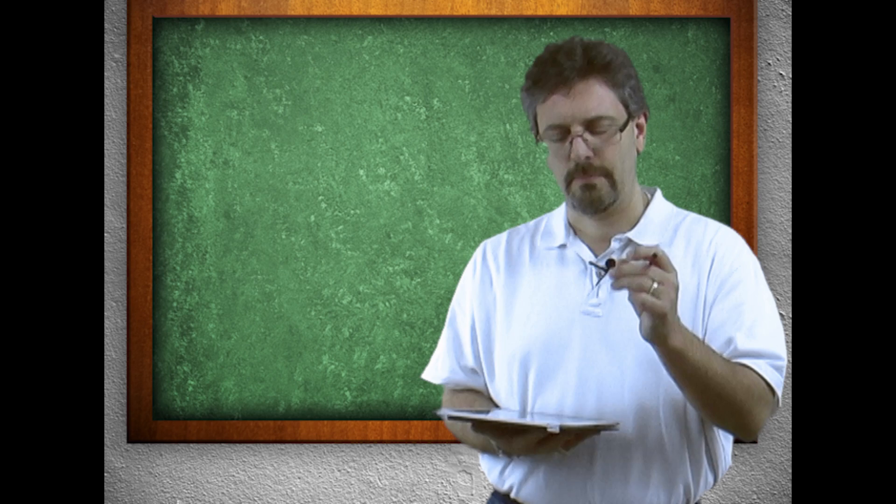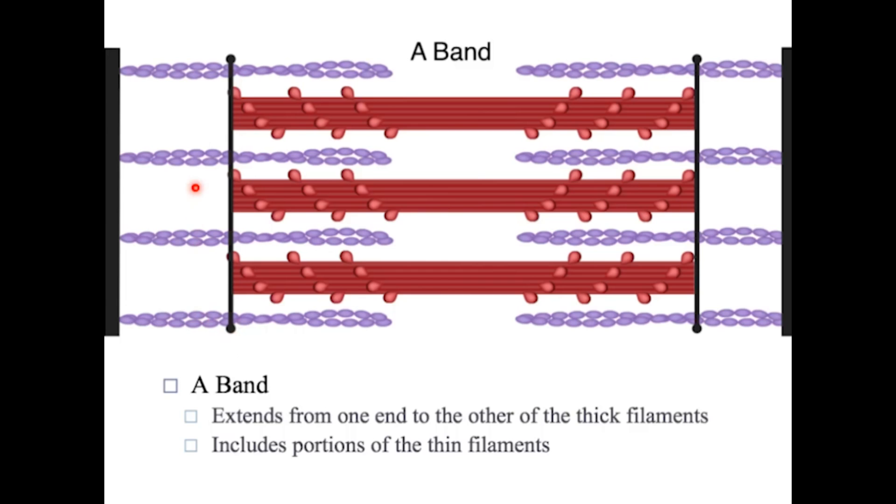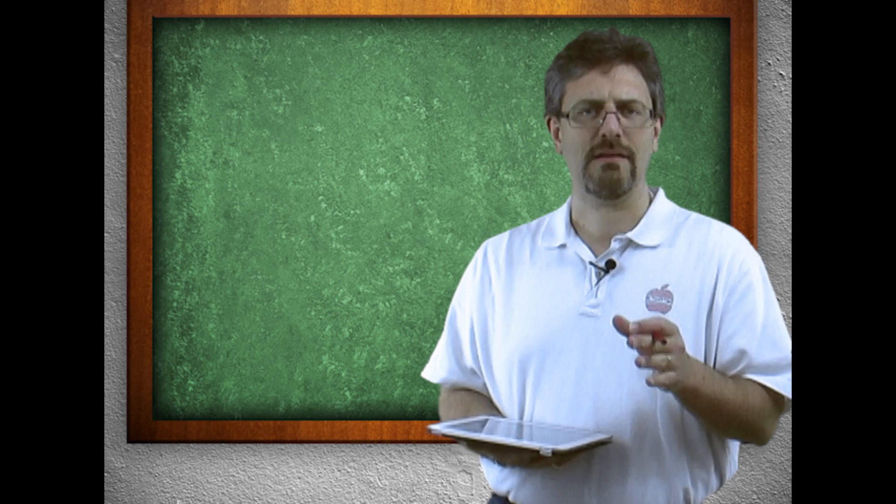First, we have the A band. The A band goes from this one end of the thick to the other end of the thick. Notice that it gets some of this thin filament. It's going to pick up some of the thin filaments right here. So the A band extends from one end of the thick filament to the other end of the thick filament and picks up some thin filament along the way.